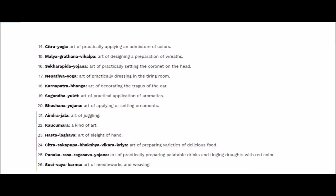Then Panakarasa Ragasava Yojana, the art of practically preparing palatable drinks and tingling droughts with red color. These were very important — for example, making a drink with Elaichi required a specific manner in which that spice had to be taken care of, to enhance the taste and bring out the flavor. Then Suchi Vaya Karma — Suchi is like a needle (Sui), so this is the art of needle work and weaving. Vaya means weaving.